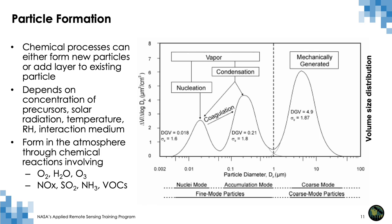In this slide, we will learn about some of the mechanisms through which particles form in the atmosphere and their respective size distribution. Chemical processes can either form new particles or add layers on existing particles. This depends on the concentration of precursors required to create new particles, incoming solar radiation, temperature, amount of water vapor or relative humidity, and other mediums in the atmosphere. Some of the particles which form through chemical processes in the atmosphere include NOx, nitrates, sulfates, and some organic compounds.